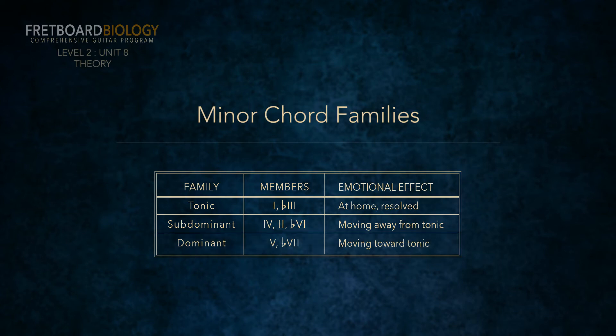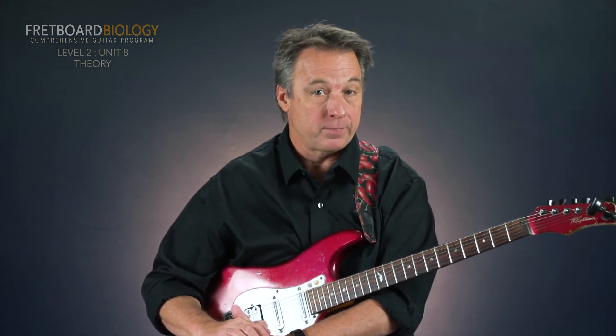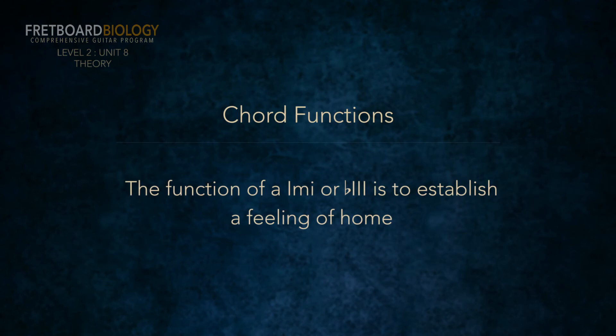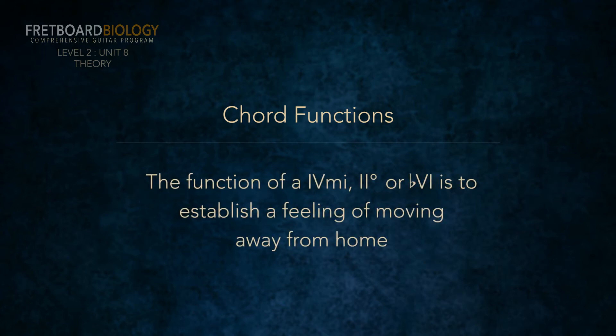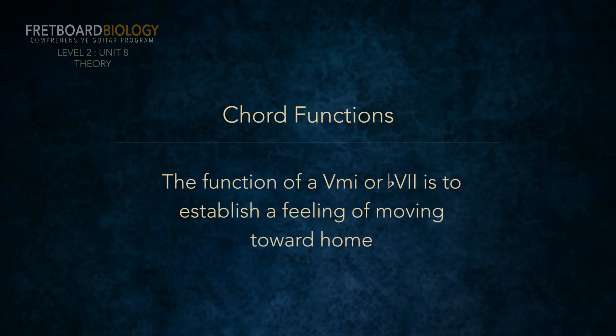Let's look specifically at the chord families in minor. It's very similar to the chord families in major with a slight difference. The tonic family is the family of the one minor chord, and the flat three major is a member of the tonic family as well — note that the flat six major chord is not here as in major. The subdominant family is the family of the four chord, and the two diminished chord and the flat six major chords are subdominant chords too — the flat six major chord is the difference from major. The dominant family is the family of the five chord, and the flat seven major chord is a member of that family too. So in minor: tonic family is one minor and flat three major; subdominant family is four minor, two diminished, and flat six major; and the dominant family is five minor and flat seven major.